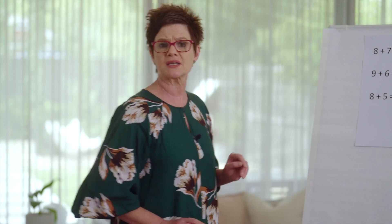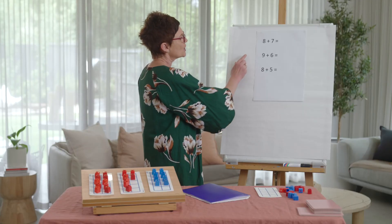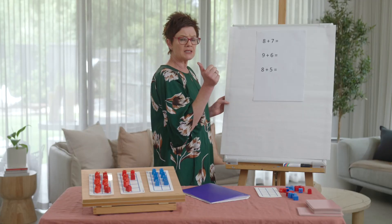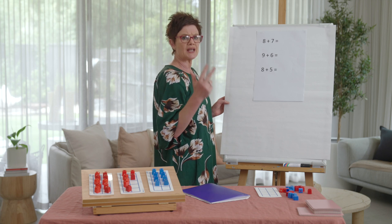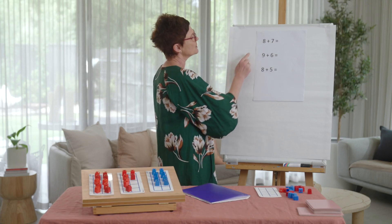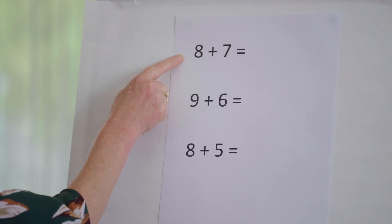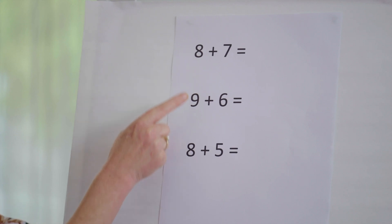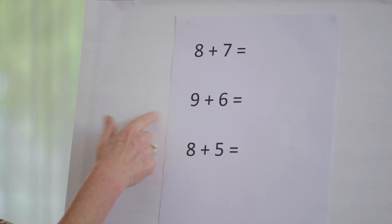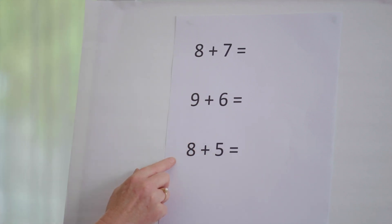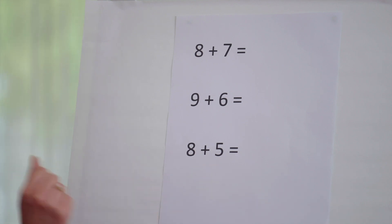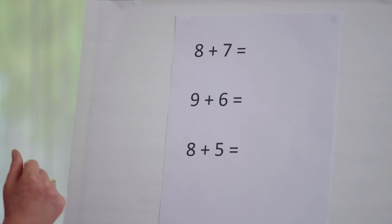Your task today is to try three examples yourself. Remember, we're going to make it, draw it, and write it. Try eight and seven bridging to ten, nine and six bridging to ten, and eight and five bridging to ten. Pop them in your learning books and I'll see you when you're finished.